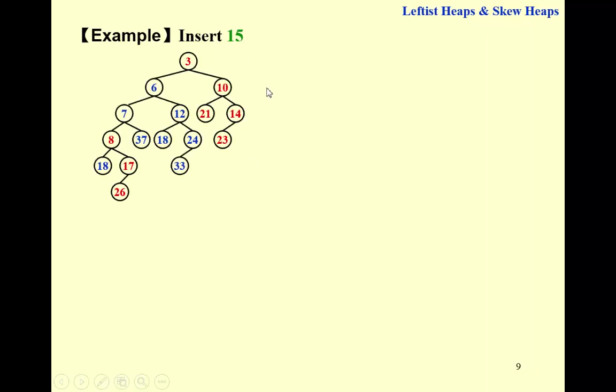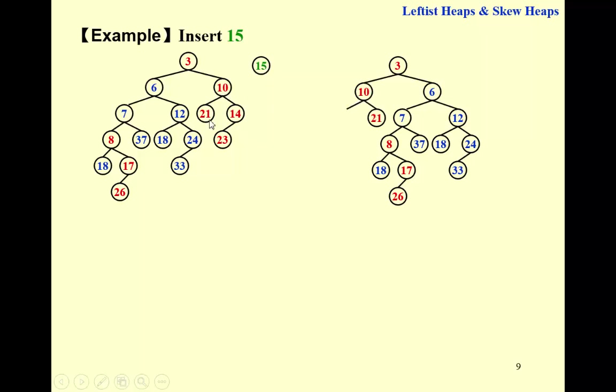Now let's insert 15 into this heap. It's like merging two heaps, except that one heap contains only one node. So what's going to happen? We're going to compare 3 and 15 and keep 3 and swap children. And then recursively merge 15 with this subtree. So compare 15 with 10, we keep 10 and swap children. And then recursively merge 15 with 14, and we're going to keep 14 and swap children. And finally, attach 15 as the last node.